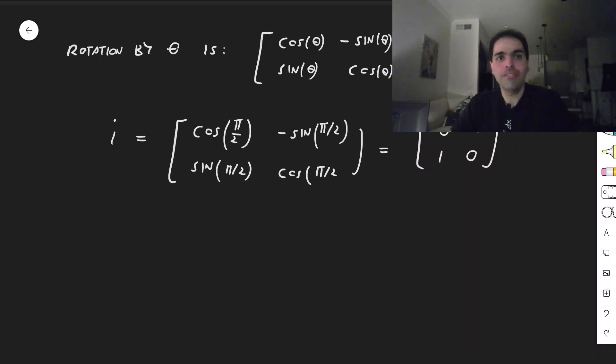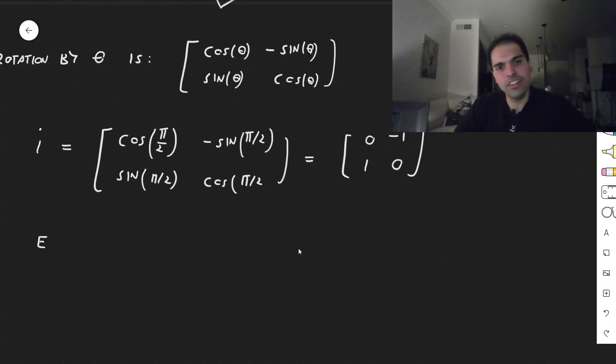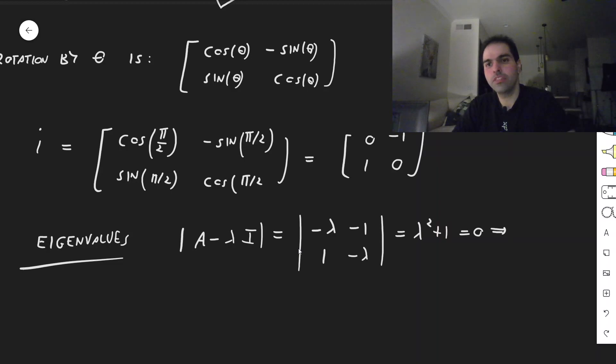And well, in order to calculate any kind of functions of matrices, the first step to do is to calculate the eigenvalues. So let's try to calculate the eigenvalues of that matrix. So let's calculate a determinant of A minus lambda I, where this is the matrix. So this just becomes a determinant of minus lambda, minus 1, 1, and then minus lambda, which becomes lambda squared plus 1. You set it equal 0, and essentially you get lambda is plus or minus i.